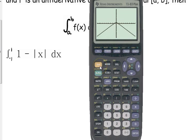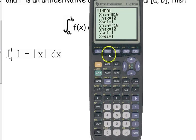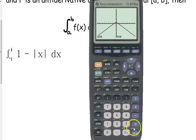So, we need to use the fact that the absolute value can be expressed as a piecewise function. Let me fix my window here so that we can see a little bit more in detail.